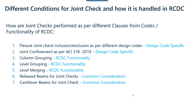We now look into different conditions. We will look into the criteria for including or excluding the joint checks for different joints. There are also some additional criteria for joint shear check specifically that are being added in ACI 2019. We will also look into different functionalities of RCDC and how the joint checks are being handled in RCDC.